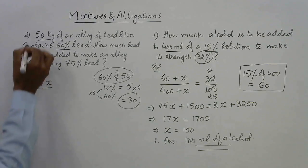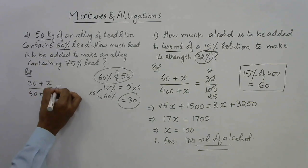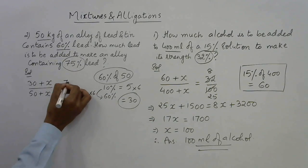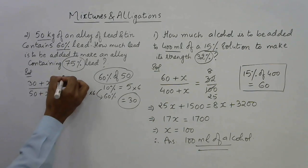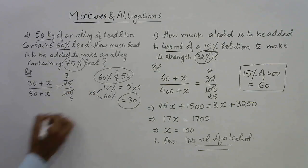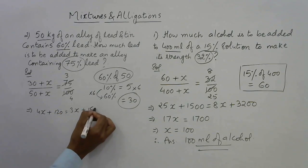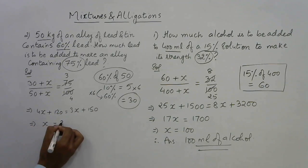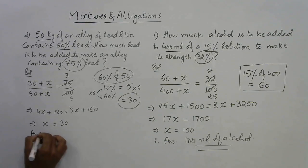We need the new percentage to be 75 percent, which is 75/100 = 3/4. So (30 + x) / (50 + x) = 3/4. Cross-multiplying: 4(30 + x) = 3(50 + x), giving 4x + 120 = 3x + 150, thereby x = 30. So the answer is 30 kg of lead is to be added.